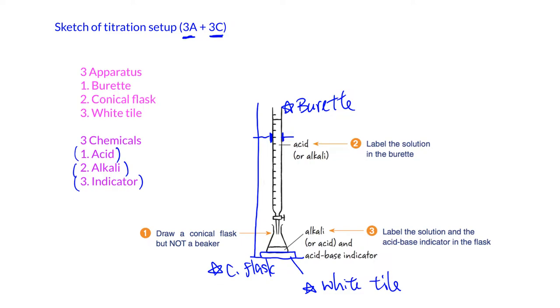So remember, the acid and alkaline, actually, they can be placed in the burette. Not necessary to be alkaline on the top. Even though long time ago, the alkaline most likely will be put in the conical flask. But now it will be fine.